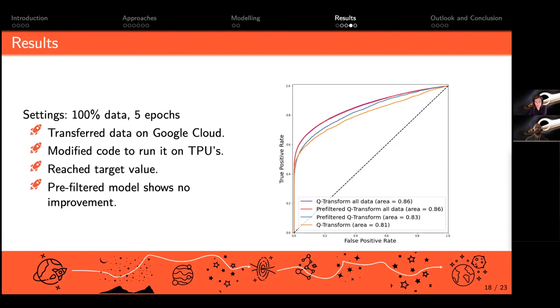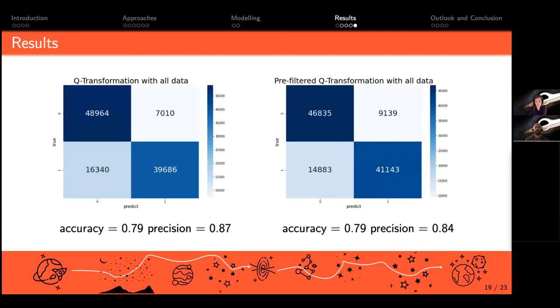Unfortunately the pre-filtered data we used did not show any improvement. You can see that also in the confusion matrices—there's not really a difference, but the non-filtered shows a tiny bit better result. So what can we still do about it?